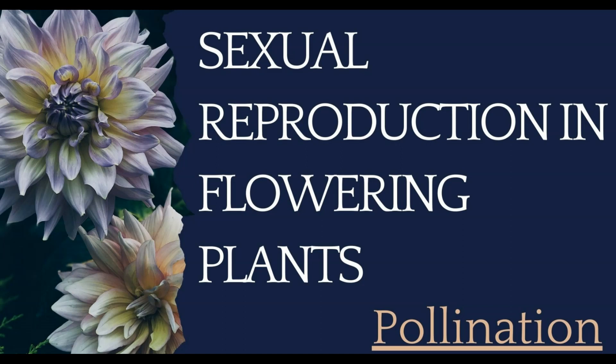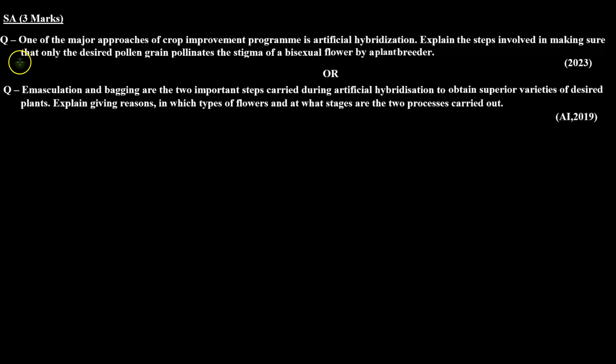Hello everyone. We are solving previous year questions of the chapter Sexual Reproduction in Flowering Plants, and the topic is pollination. In today's session we are going to solve a short answer type question of three marks which was asked in two different ways.